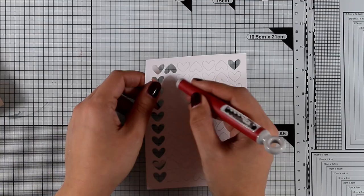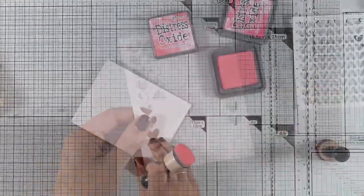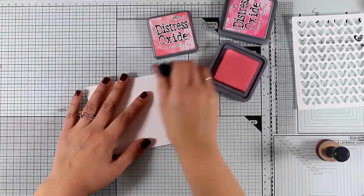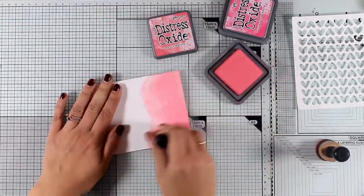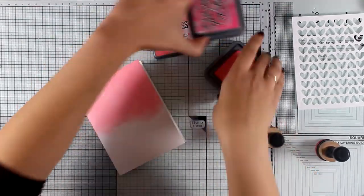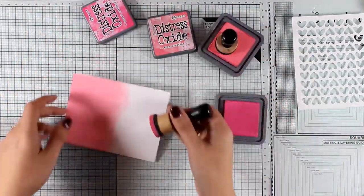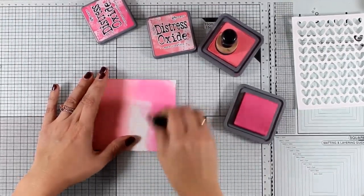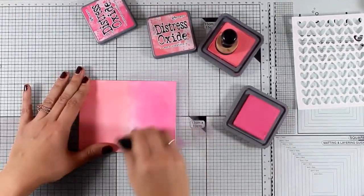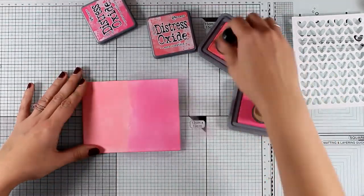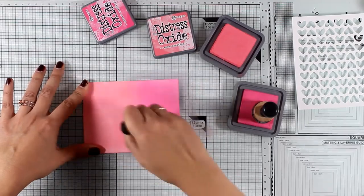Now I'm working directly on my card base and I'm going to apply some ink. This is Distress Oxide ink with my blending tools. I'm just going to add two different colors: Worn Lipstick and Picked Raspberry. And I'm not going to bother too much about making this the perfect blending. After all it's going to be covered with the panel with all those hearts and most of the imperfections are not going to show.